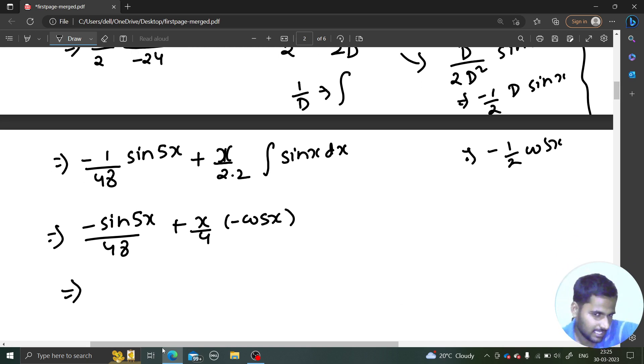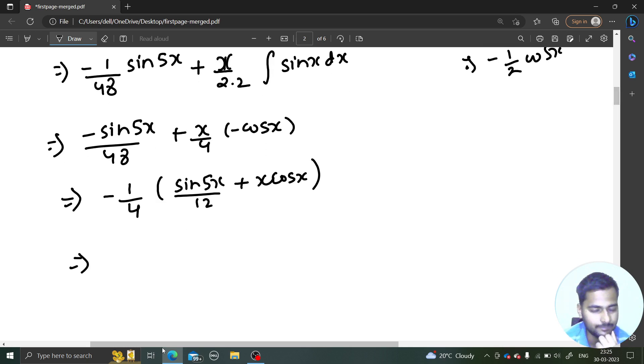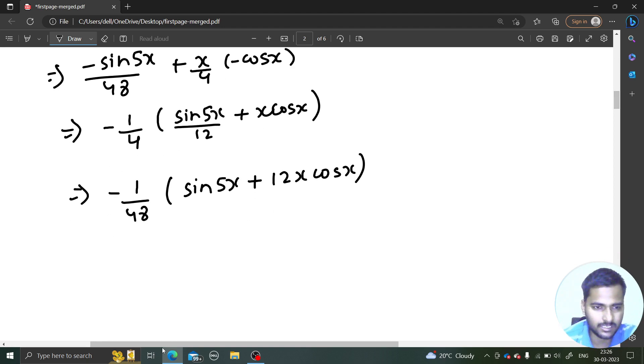If I simplify this, I can take minus common, I can take 1/4 common, and I will get sin(5x)/12 + x·cos(x). In some textbook you can see a further simplification. They have taken 1/12 out, taken LCM. This was your particular integral.